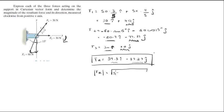The square root of 39.3 squared plus 37.27 squared, which is equal to 54.16 newtons. That's the magnitude.